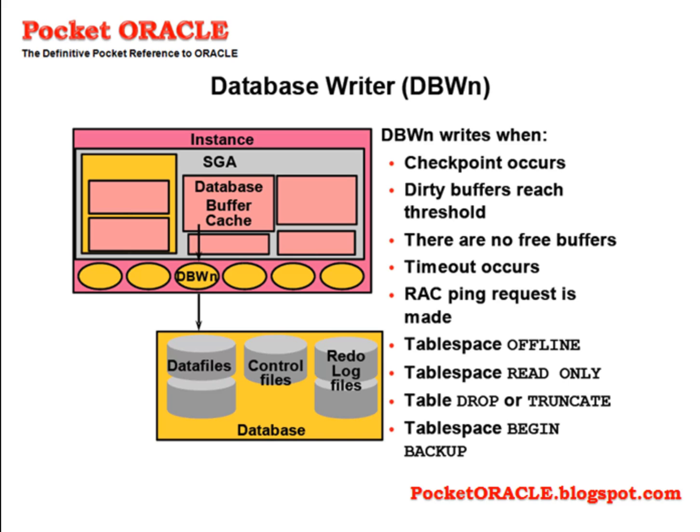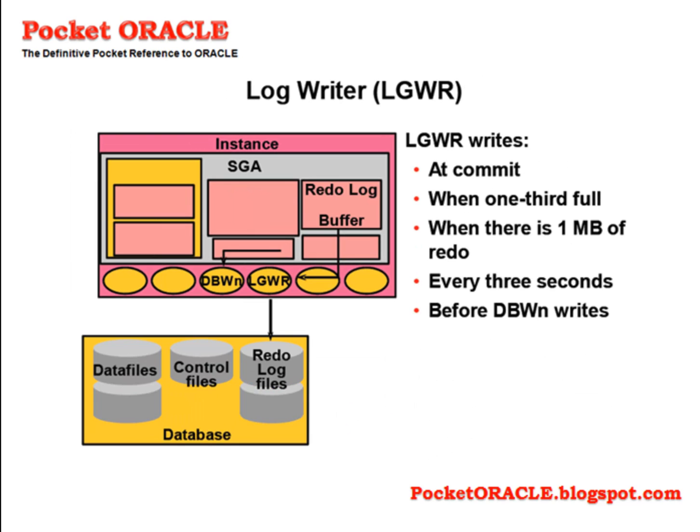The DBWN process or processes is responsible for all writing to data files. It writes when a checkpoint occurs, dirty buffers reach threshold, there are no free buffers, tablespace operations, and backup operations. The LGWR propagates all changes applied to data in the database buffer cache to the online redo log files on disk. In contrast with DBWN, this disk write activity is done as near as possible in real time: at commit, when one-third full, when there is one megabyte of redo.